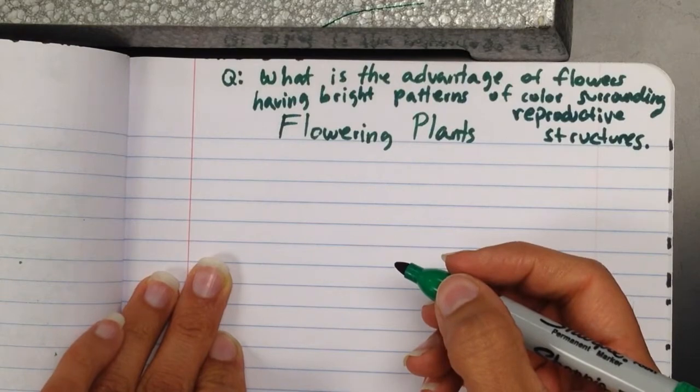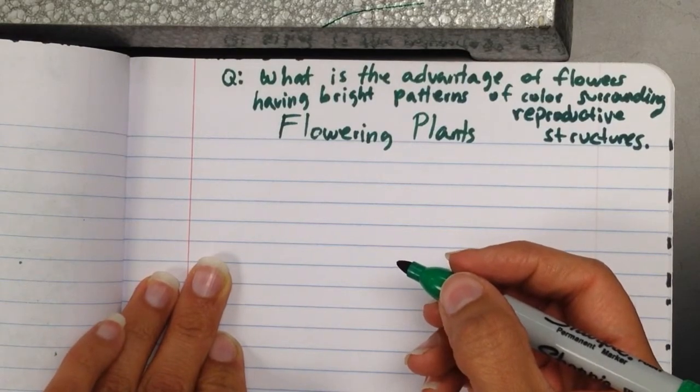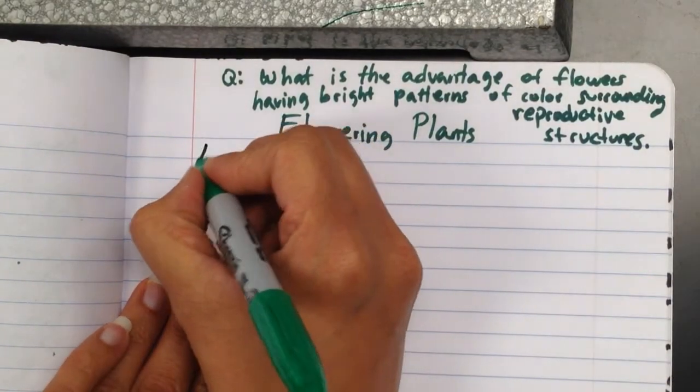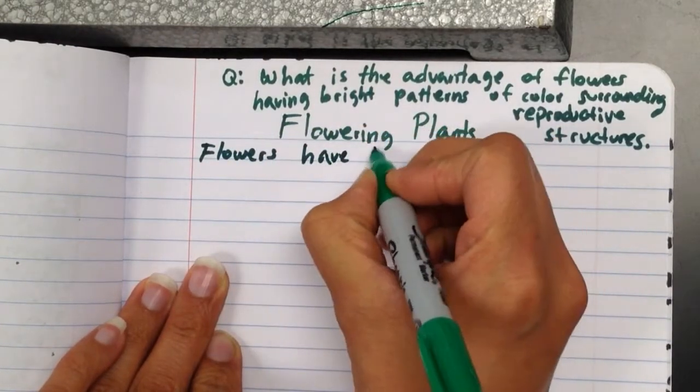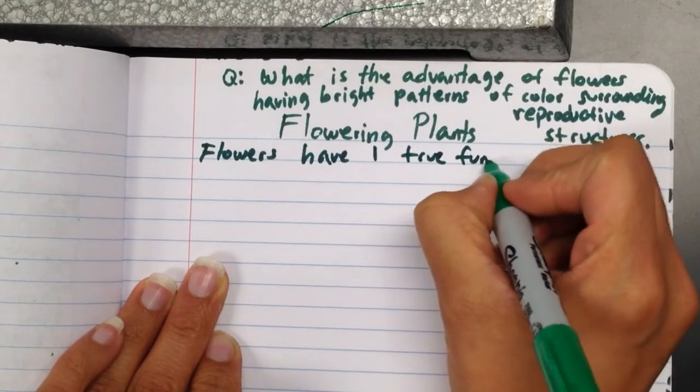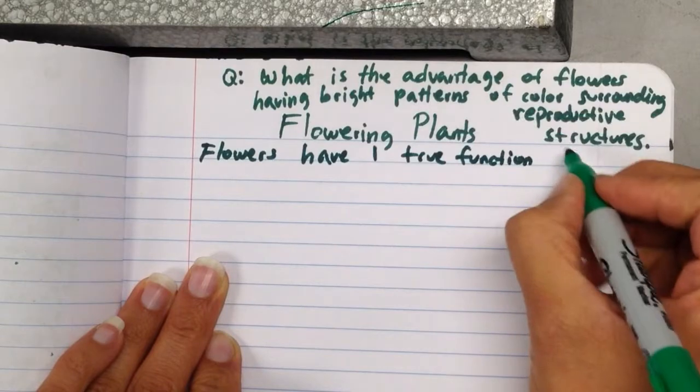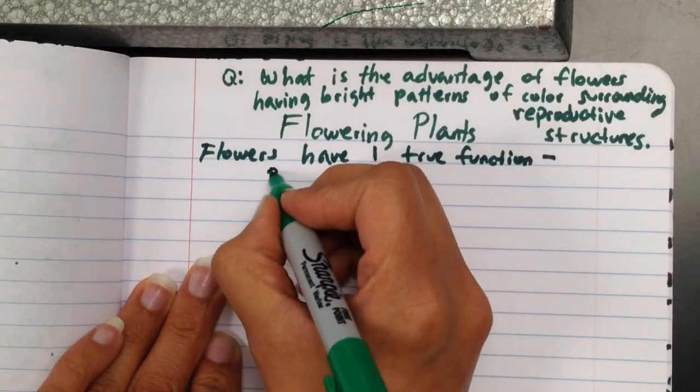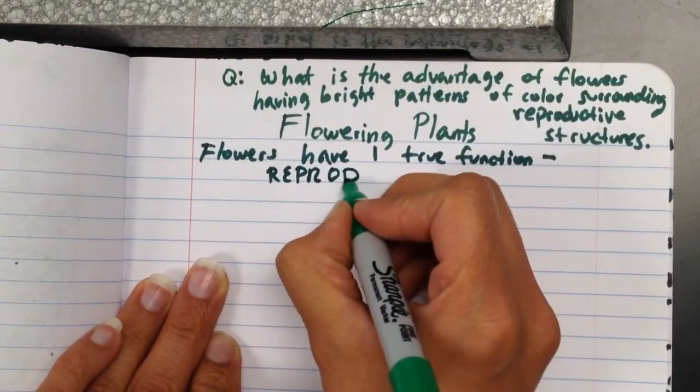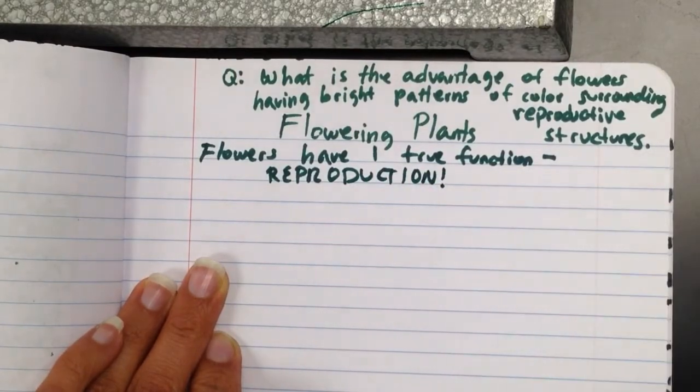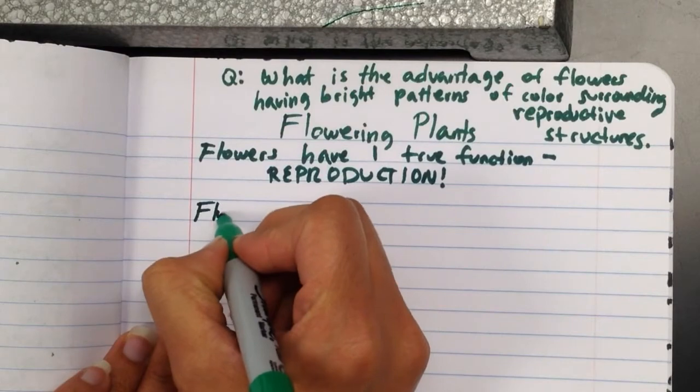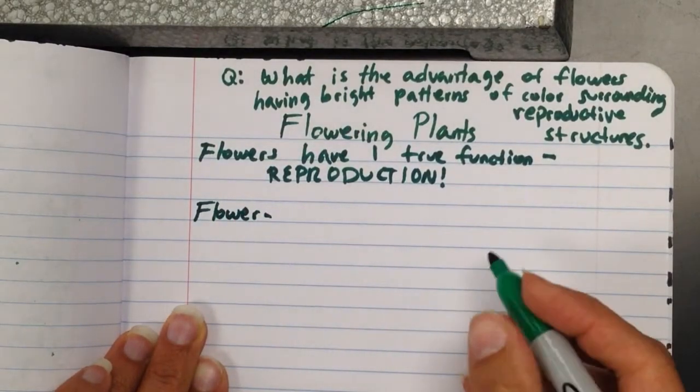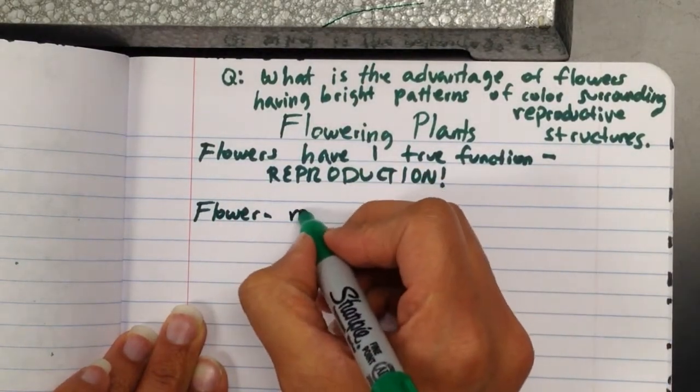Okay, so flowers come in all shapes and sizes of all colors, but despite all of this, flowers have one function. So flowers have one true function, which is reproduction. Yes, they're pretty, but their main function is to reproduce. So the definition of a flower is the reproductive structure of an angiosperm.